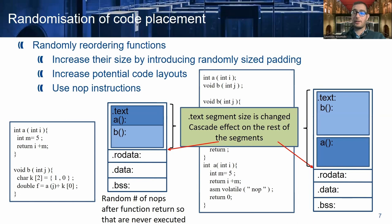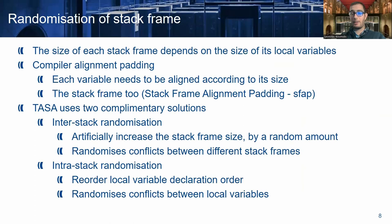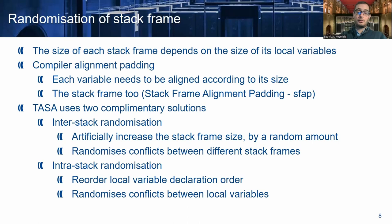Now let's talk about stack frame randomization. The size of each stack frame depends on the number of local variables and their size. Also, the compiler introduces its own alignment padding, because each variable needs to be aligned according to its size, and this includes also the entire stack frame. In TASA, we use two complementary solutions: inter-stack randomization and intra-stack randomization. In inter-stack randomization, we artificially increase the stack frame size by a random amount, and in this way we randomize conflicts between different stack frames. For intra-stack randomization, we reorder the variables inside the function, which changes the conflicts between local variables inside the same function.